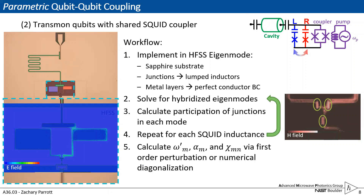At the end we can calculate the dressed mode frequencies, the anharmonicity, and the cross-Kerr coupling either via the first order perturbation equation shown before or numerical diagonalization, which we often go to as it proves to be more accurate compared to our experimental data.